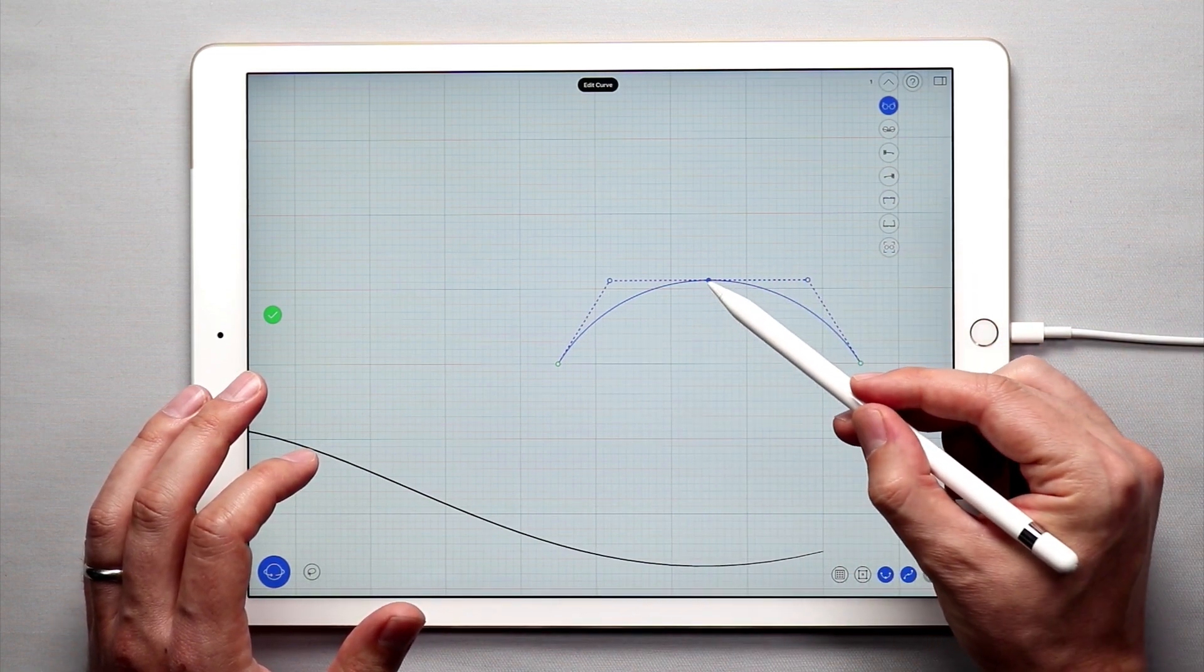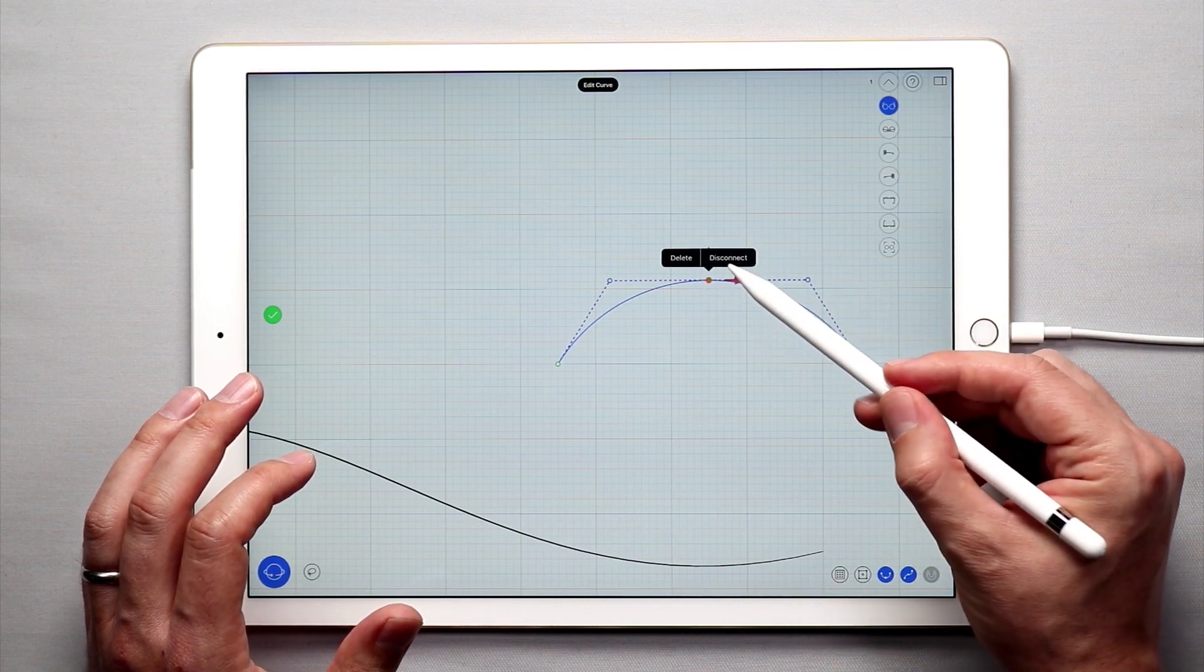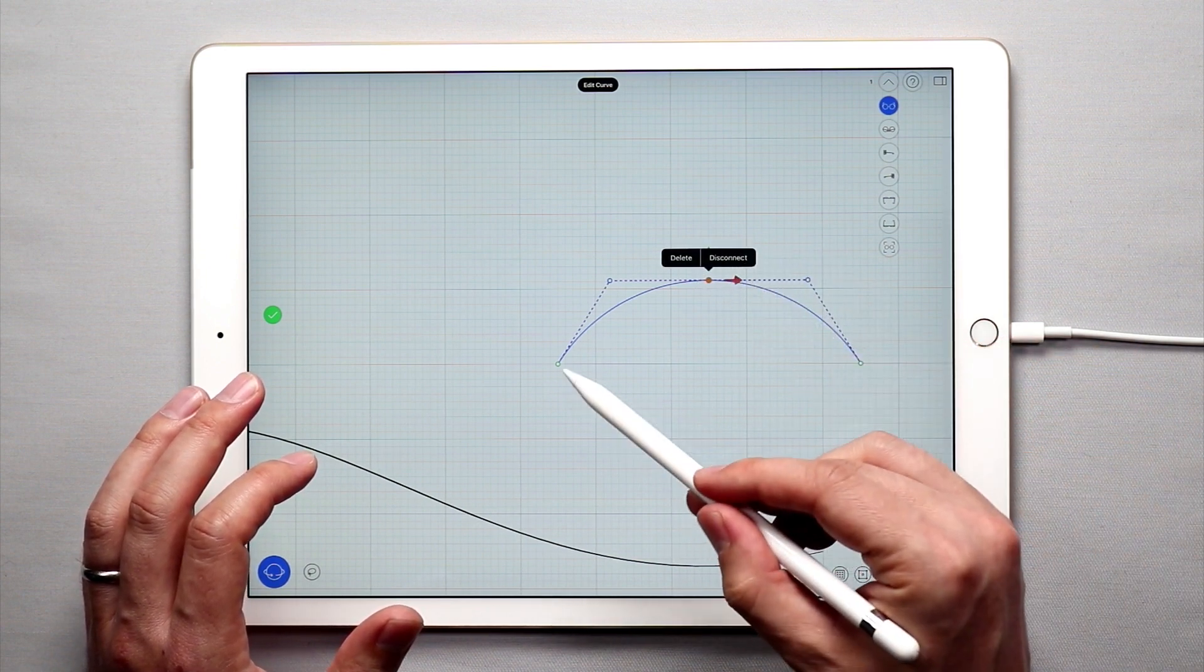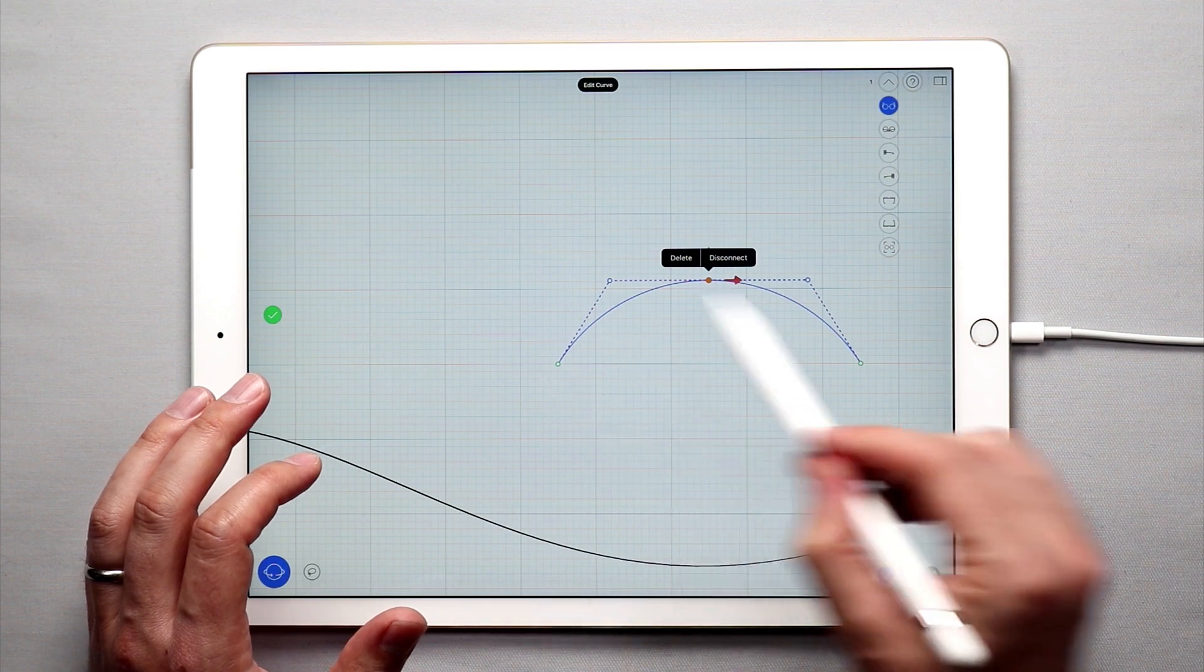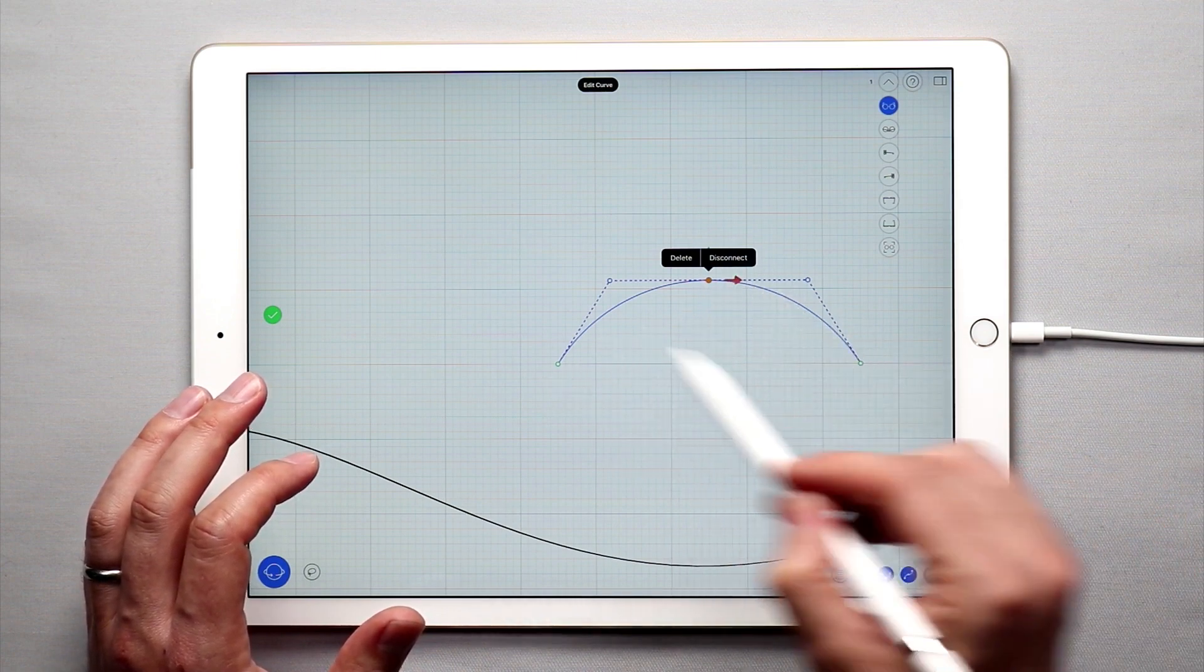You can see that this one right here is solid blue. If I tap and hold here, I have the option to disconnect it. Essentially these are two half-arc curves that are connected to make a complete arc.